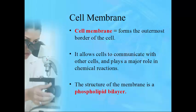We'll start talking about some of the structures of the cell, then get into various forms of tissues. The first part: the cell membrane is also called the plasma membrane — either term is acceptable, they're interchangeable. This forms the outermost border or barrier of the cell. It helps cells communicate with each other and also helps control what goes in and out of the cell.